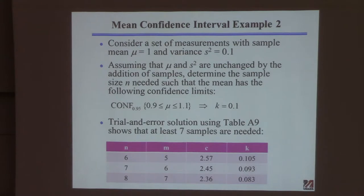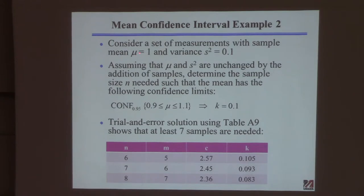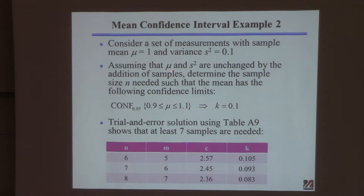Now I want to show something about the effect of sample size on your ability to compute confidence intervals. Let's say we have measurements with a sample mean of one and a sample variance of 0.1. I'm going to assume that x̄ and s-squared are unchanged by adding more samples — not very realistic, but it simplifies the problem to prove a point.